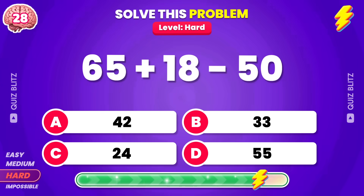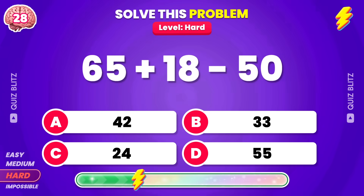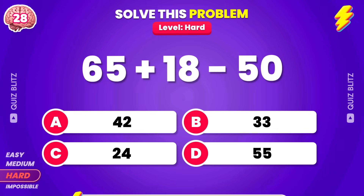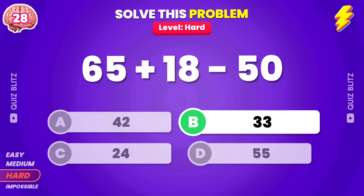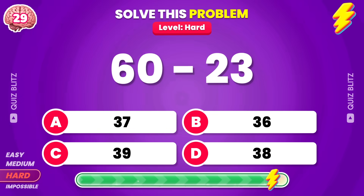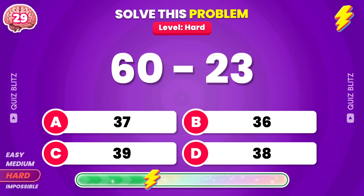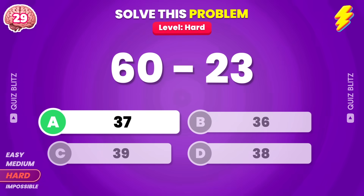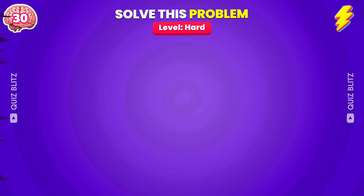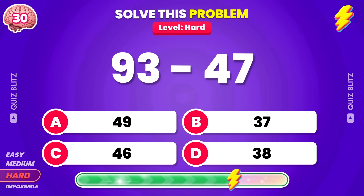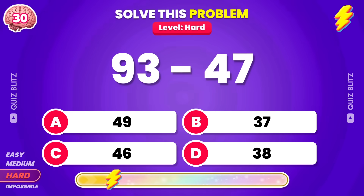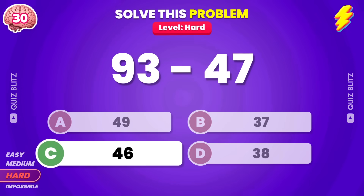65 plus 18 minus 50. The answer is 33. 60 minus 23. The answer is 37. 93 minus 47. The answer is 46.